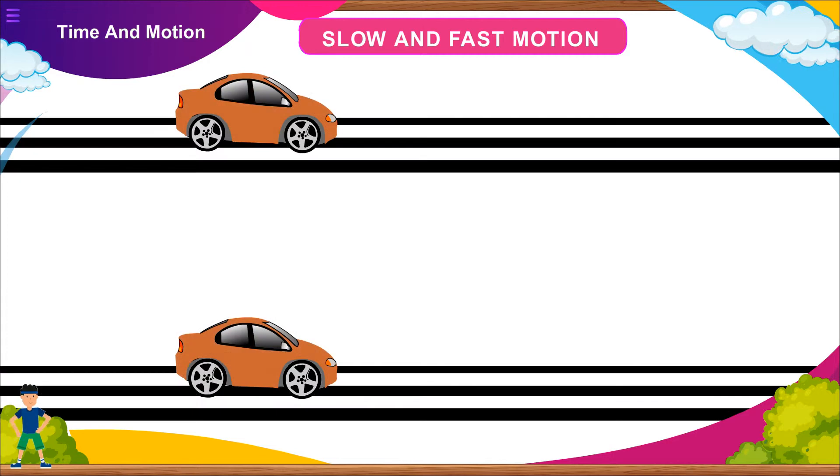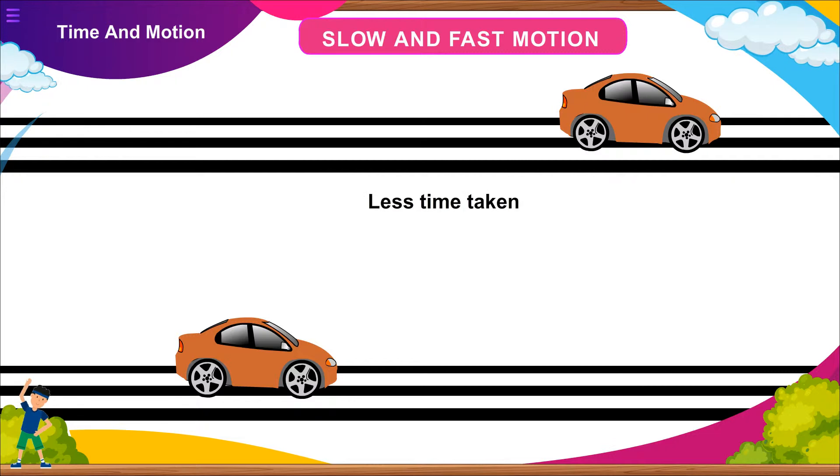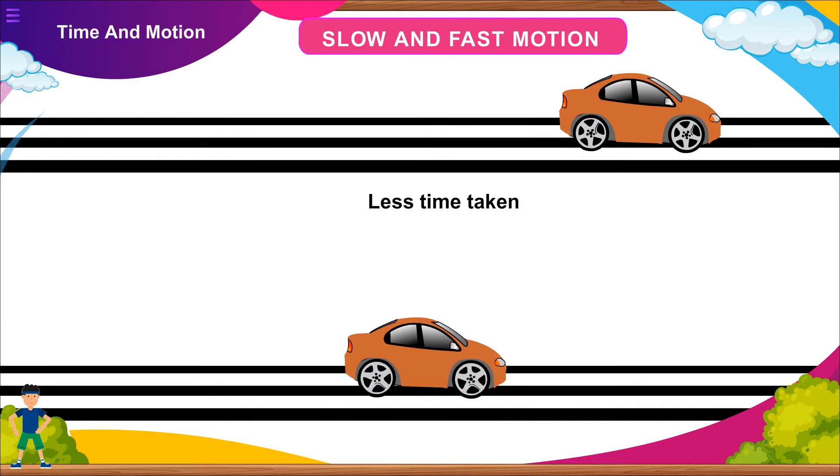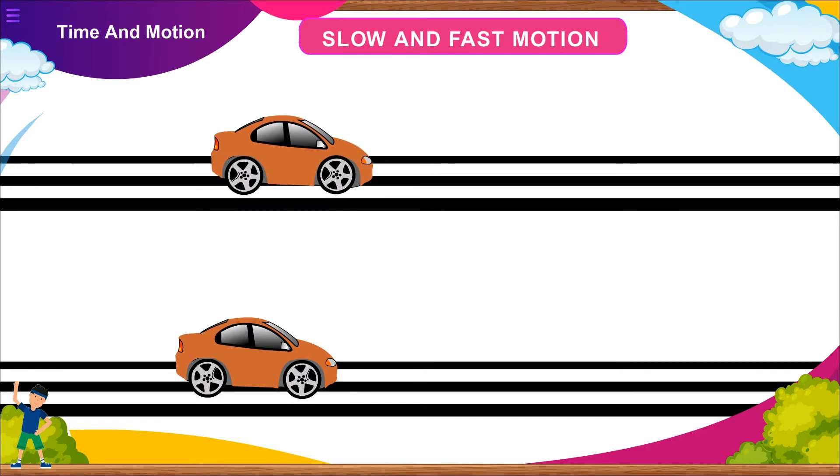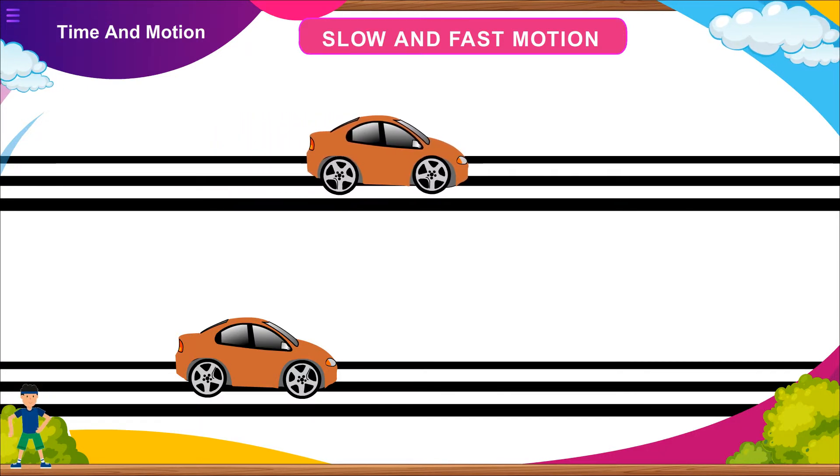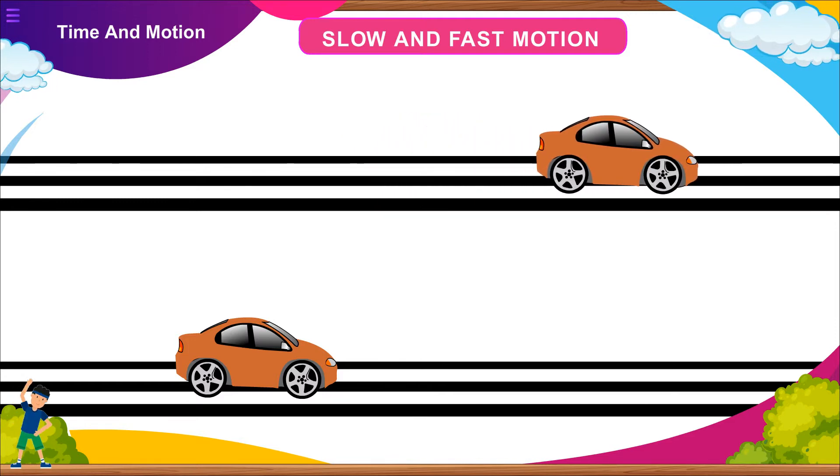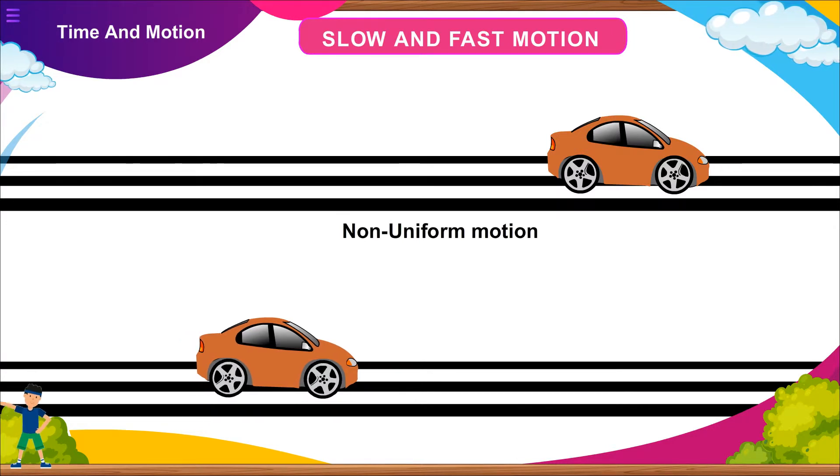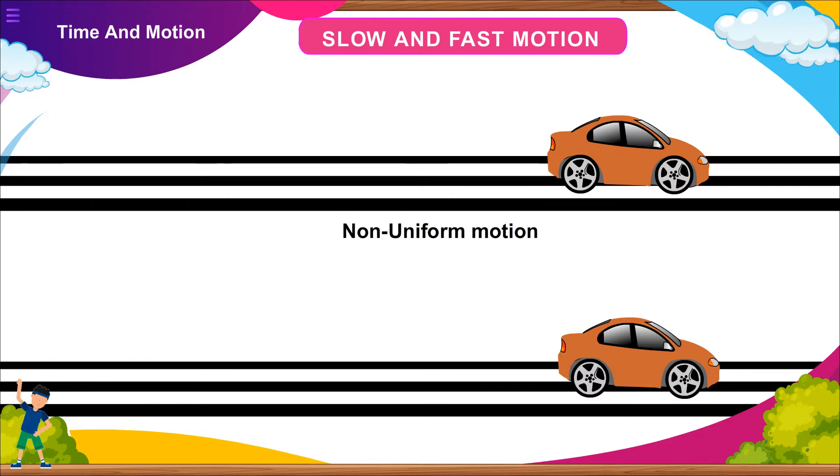Slow and fast motion: Motion of an object can be slow or fast. If an object covers a given distance in a short interval of time, it is said to be fast. If the time taken is more, the motion is said to be slow. Every day we seldom find objects moving with a constant speed over long distances. If the speed of an object moving along a straight line keeps changing, its motion is said to be non-uniform motion. On the other hand, an object moving along a straight line with a constant speed is said to be in uniform motion. In this case, the average speed is same as the actual speed.